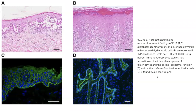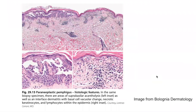Here is another histological image from the Bologna textbook which demonstrates areas of suprabasilar acantholysis as well as an interface dermatitis with basal cell vacuolar changes, necrotic keratinocytes, and apoptotic cells within the epidermis.